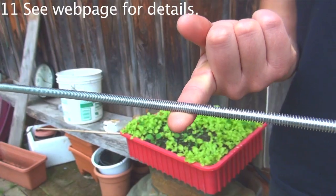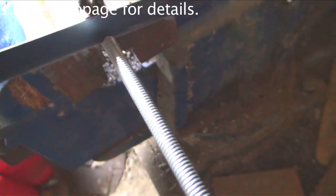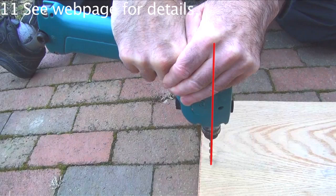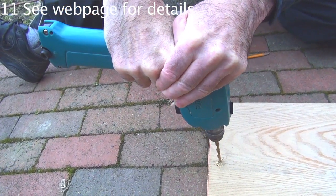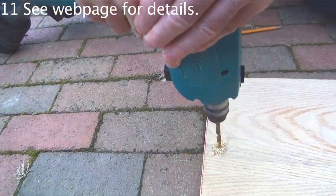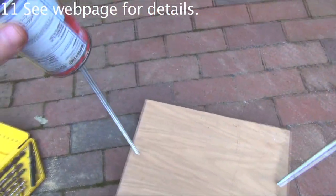Cut the piece of threaded rod in half and drill the holes for them in the board. Slant the drill a bit away from the board, otherwise the rods tend to lean in.